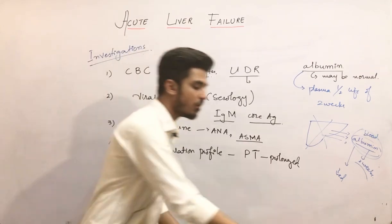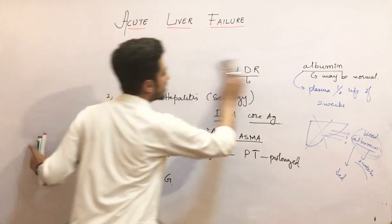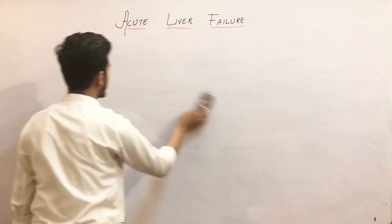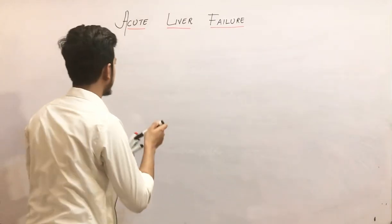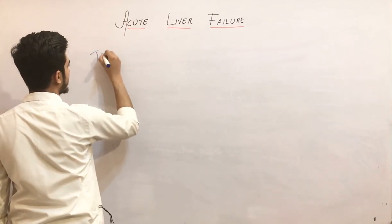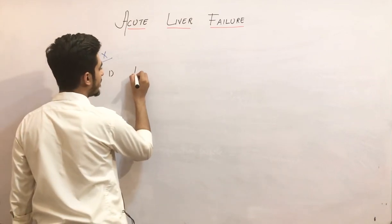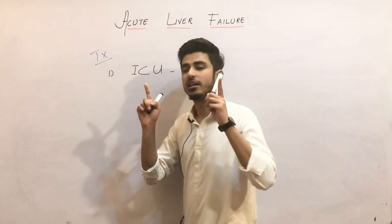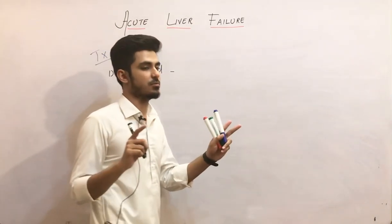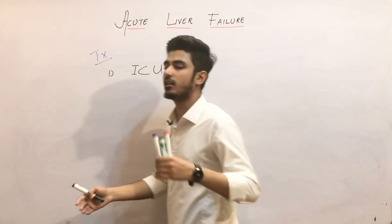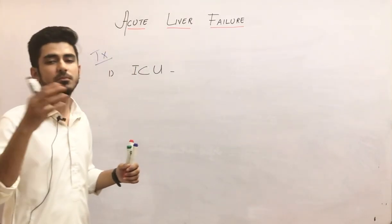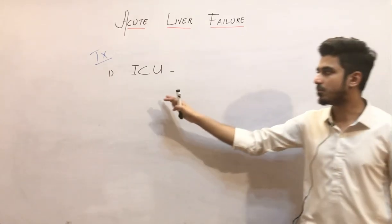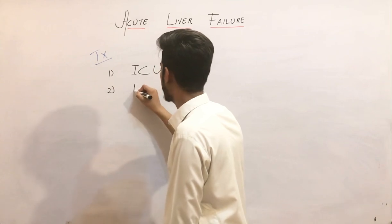Now how will you manage the patient? Management is easy — you just have to remember the clinical features. First, you have to admit the patient to the ICU. Why? Because you have to maintain hemodynamic support and ventilator support. From the ATLS protocol, the ABCDE approach — you have to maintain airway, breathing, and circulation. That is why we admit the patient to the ICU for hemodynamic stability and ventilator support.